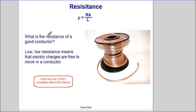What is the resistance of a good conductor? A good conductor has a low resistance, and that means charge can move through it. So copper has a relatively low resistance.